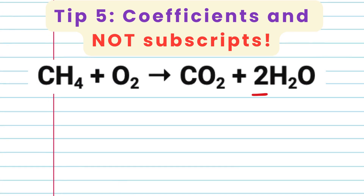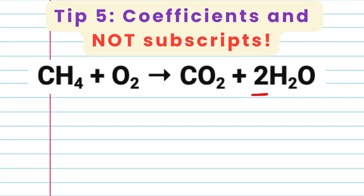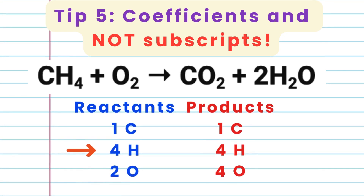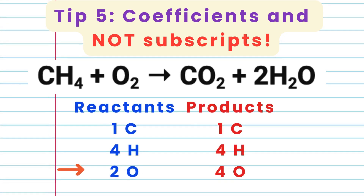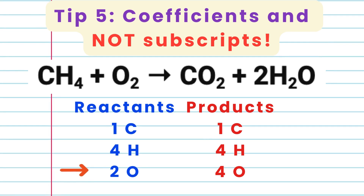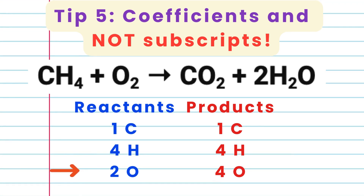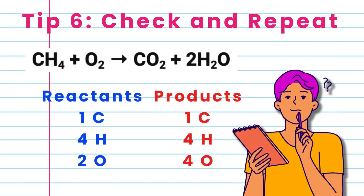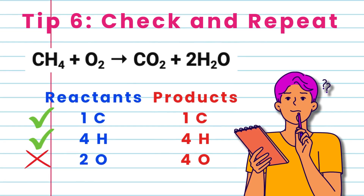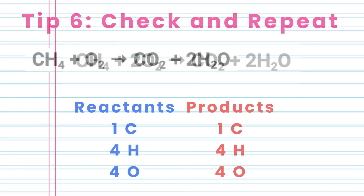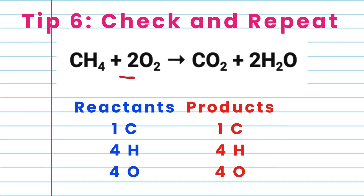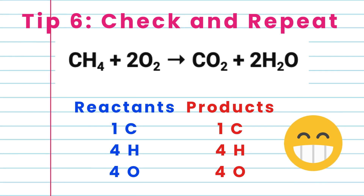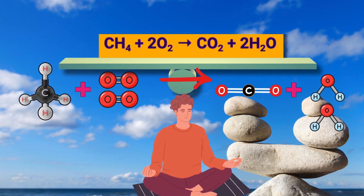So we put a coefficient of 2 in front of the H2O molecule, which makes the number of hydrogen atoms 4 on the right-hand side as well, and it also makes the number of oxygen atoms 4 on the right-hand side. Tip 6: Check and repeat. Since we have 4 oxygen on the right and only 2 on the left, we put a coefficient of 2 in front of the O2. So now all of the atoms are balanced and the equation is balanced.